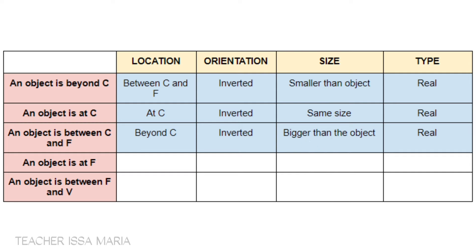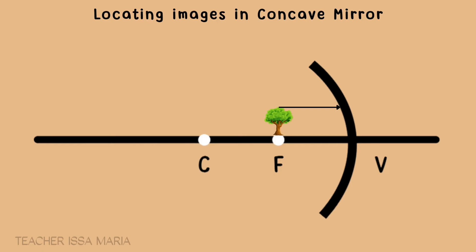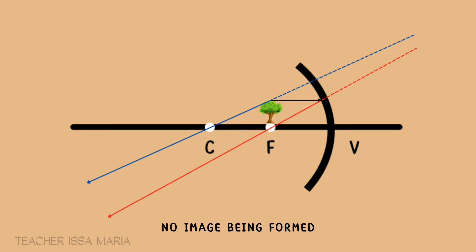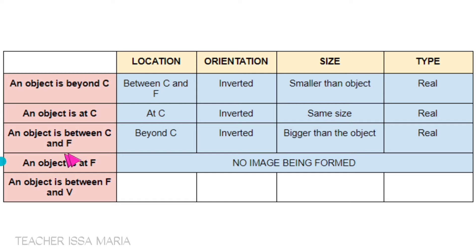Case 4: the object is at F (principal focus). Draw a line parallel to the principal axis that reflects toward the principal focus, and the second ray hits the center of curvature. We observe that no intersection occurs. We try extending the rays to check if the image is behind the mirror, but still no intersection is found. Therefore, no image is formed when the object is at F. Take note: when the object is at the principal focus, no image is produced.